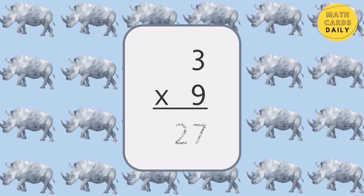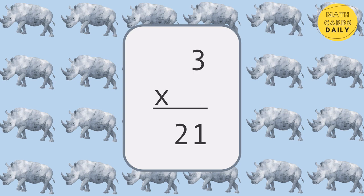3 times 9 is equal to 27. 3 times 5 is equal to 15. 3 times 7 is equal to 21.